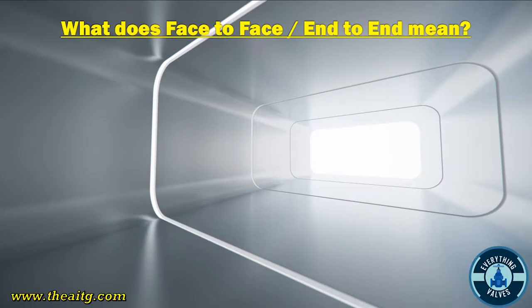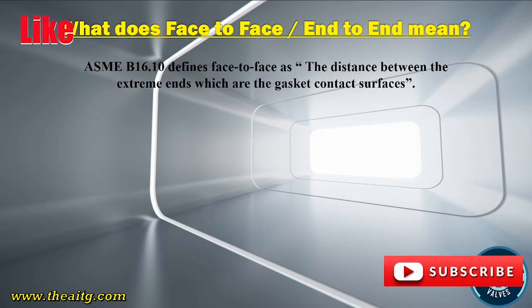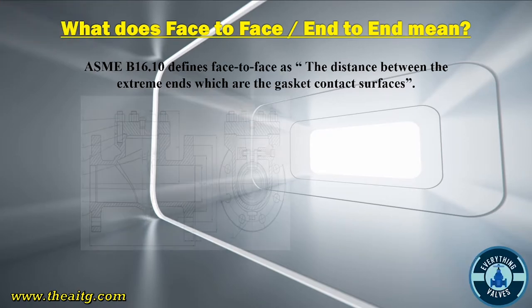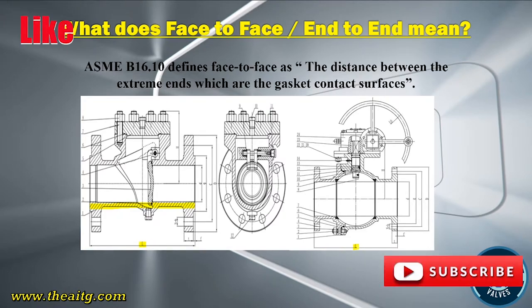What does face-to-face and end-to-end mean? ASME B16.10 defines face-to-face as the distance between the extreme ends, which are the gasket contact surfaces. The face-to-face is measuring the distance from one end to the other, and in these drawings, dimension L is referring to the face-to-face.